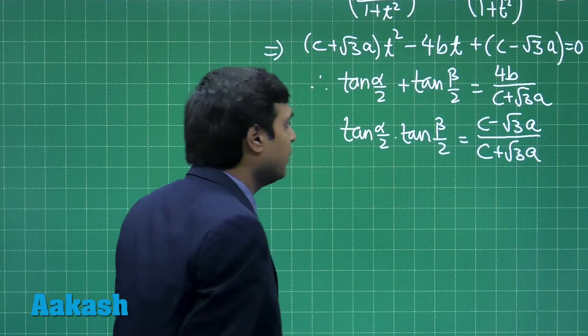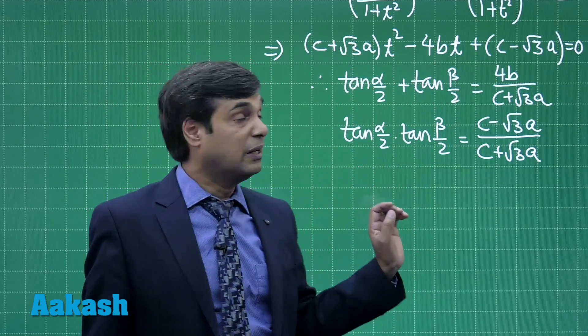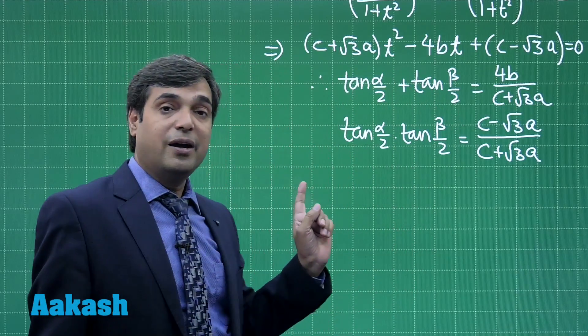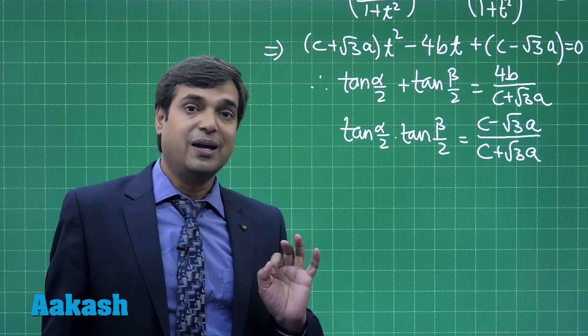So this is clear. We obtained sum of the roots and product of the roots. α + β in this question is given to me as π/3.